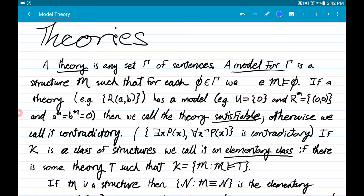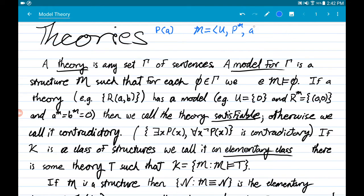So I will again use the sentence P of A, but this time construct a counter-model. So again, I will have a structure which has a universe, a denotation of the predicate P, and a denotation of the constant term A.